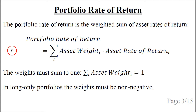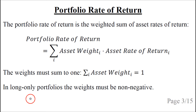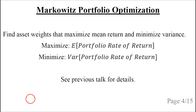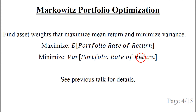The portfolio rate of return is a weighted sum of asset rates of return. The weights must sum to 1, and if we have long-only portfolios then the weights must be non-negative, and if we also allow short selling then the weights can be negative. In Markowitz portfolio optimization we wish to maximize the mean portfolio rate of return and minimize the variance of the portfolio rate of return. See the previous talk for details.